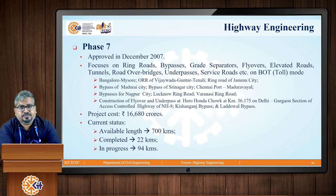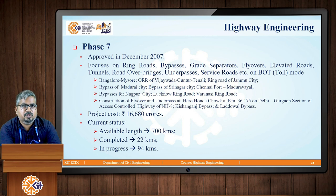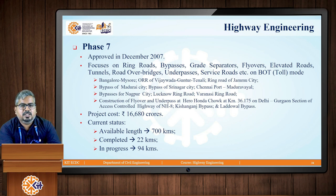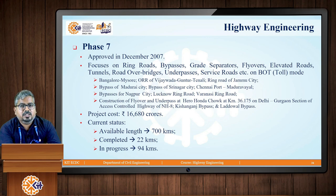Phase 7 was approved in December 2007. The main focus was on ring roads, bypasses, road over bridges, underpasses, service roads, etc., based on the BOT mode. Examples include the Bangalore-Mysore road, bypass of Madurai city, bypass of Nagpur city, and various other road stretches. The estimated project cost was rupees 16,680 crores. The current status shows the available length is 700 kilometers, out of which 22 kilometers have already been completed, while work in progress covers 94 kilometers.